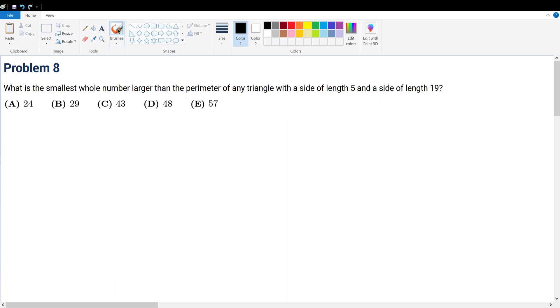Problem 8. What is the smallest whole number larger than the perimeter of any triangle with a side length of 5 and a side length of 19?